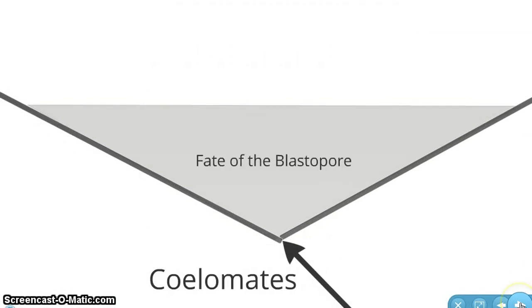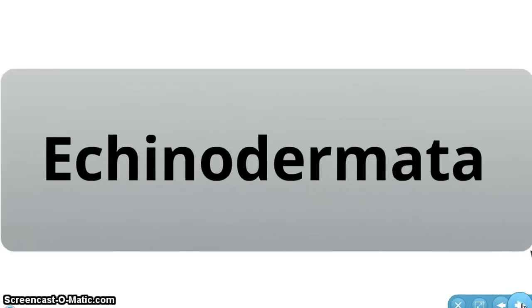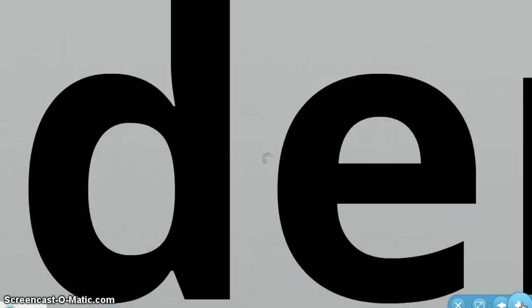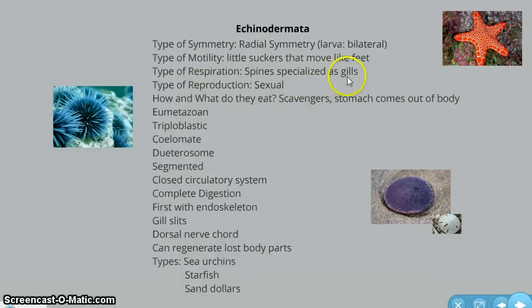Then we return to the question: what is the fate of the blastopore? If the answer is deuterostome, we come to two phylums: Chordates, which is what we are — we have a spine running from our brain down our backs — and Echinodermata, which we are going to look at today. Echinodermata has radial symmetry, but their larvae had bilateral symmetry, so they go through a shift. As adults they possess radial symmetry. For motility, they have little suckers that move like feet, allowing them to grab hold of rocks. Their spines are specialized as gills, and as water passes over them it pulls out the nutrients needed to breathe. They reproduce sexually, are scavengers, and sometimes their stomach comes out of their body in order to eat.